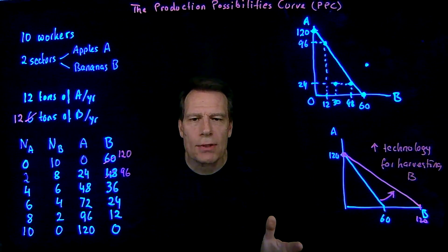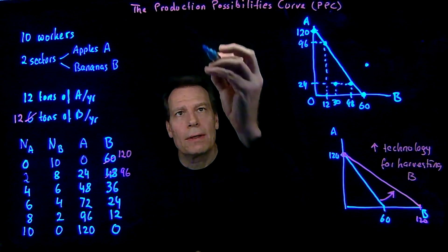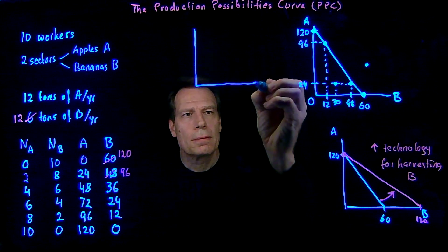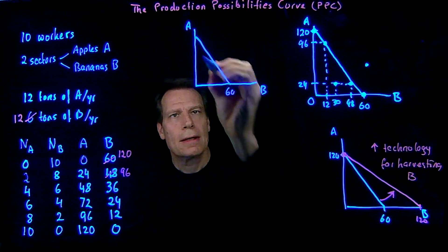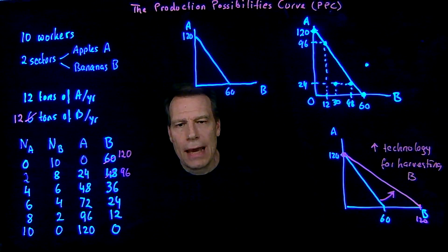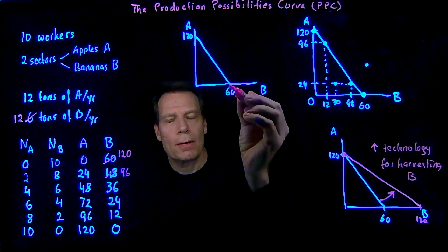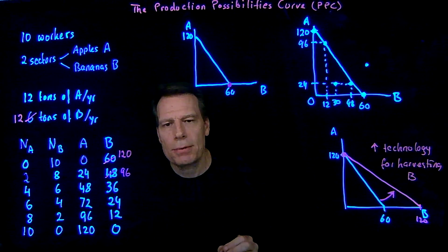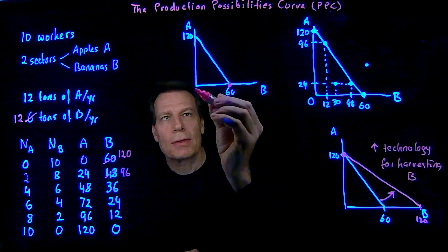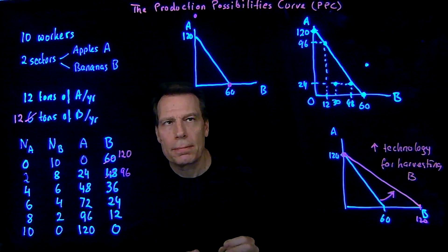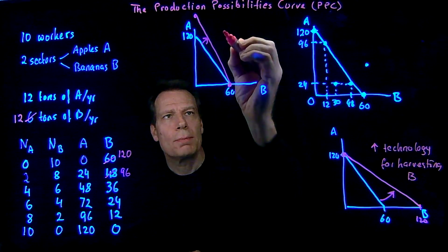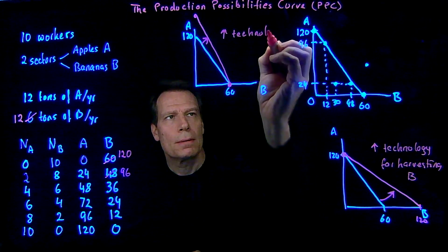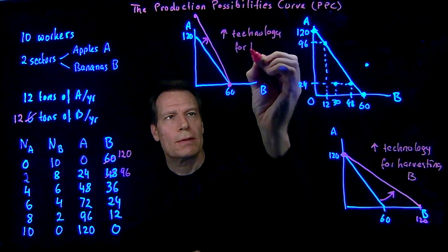We could similarly ask what if instead there was an increase in technology for harvesting apples. We could again start with our initial production possibilities curve — bananas on this axis, apples on this axis, with our initial curve at 60 and 120. But now with a technological change in the apple production sector, if we allocated all our workers to the banana sector we'd still only be able to produce 60 bananas. But if we allocated all workers to the apple sector, we'd be able to produce a lot more apples. So we would get a rotation of the production possibilities curve outward along the apple axis.